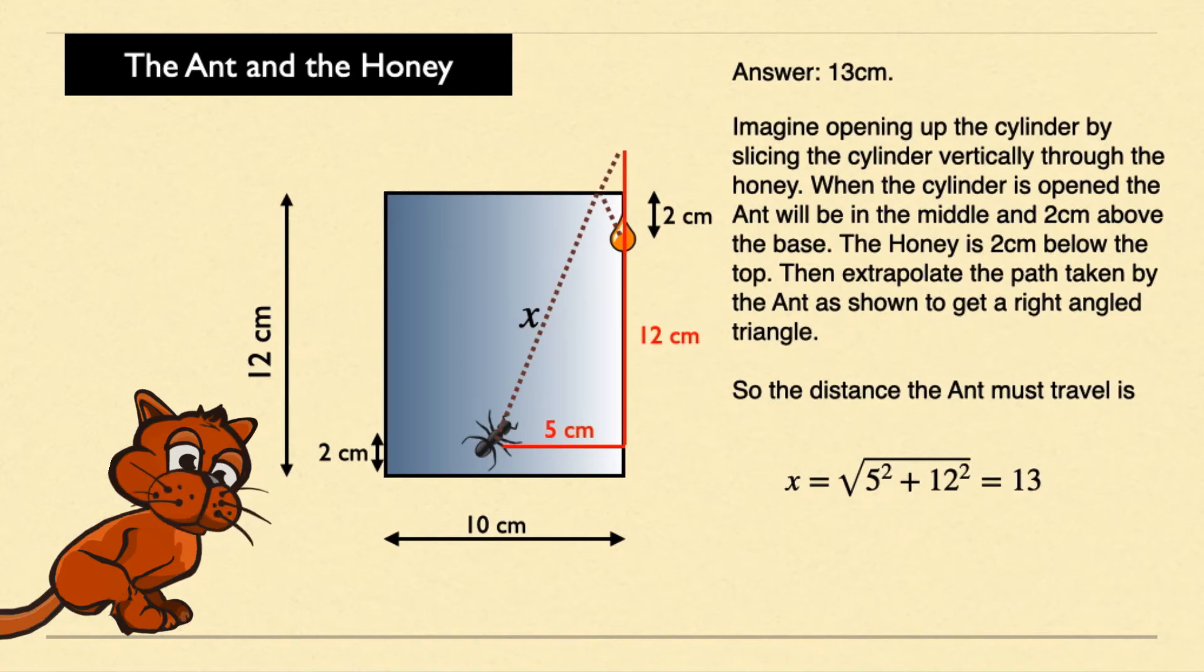The honey is two centimeters below the top. You then have to extrapolate the path taken by the ant, as shown, to get a right-angled triangle.